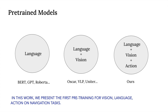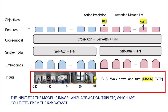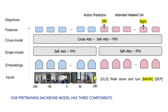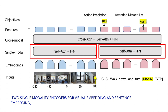The input for the model is image-language-action triplets, which are collected from the R2R dataset. Our pre-training backbone model has three components: two single-modality encoders for visual embeddings and sentence embeddings, and one cross-modality encoder for the fusion of image and language.